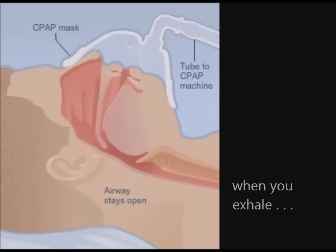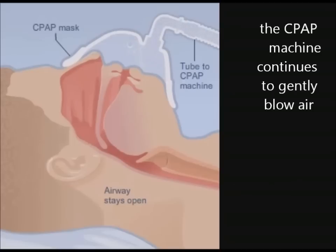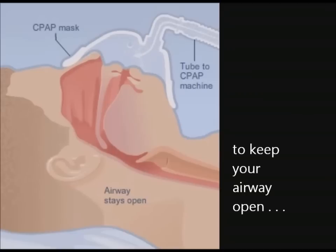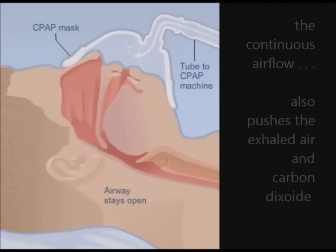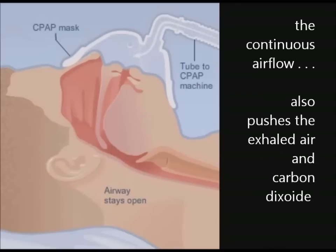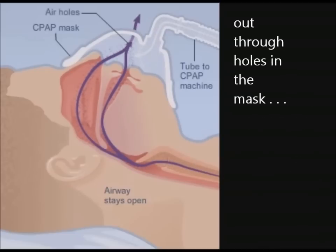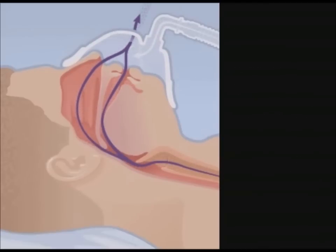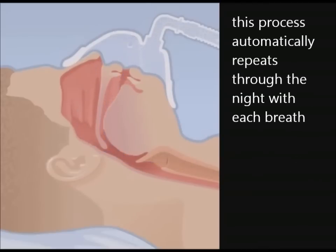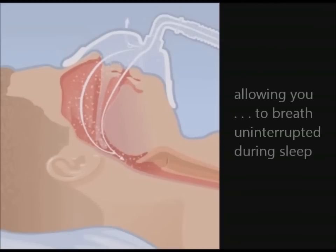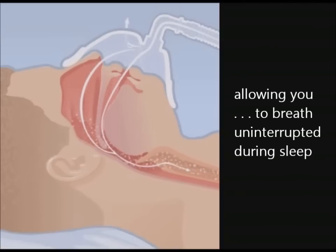When you exhale, the CPAP machine continues to gently blow air to keep your airway open. The continuous air flow also pushes the exhaled air and carbon dioxide out through holes in the mask. This process automatically repeats throughout the night with each breath, allowing you to breathe uninterrupted during sleep.